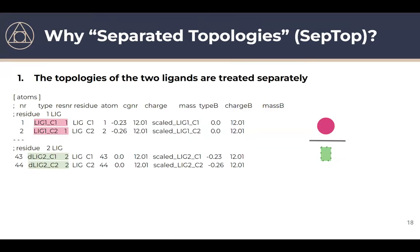Why 'separated topologies'? The reason is that the topologies of the two ligands are treated separately. In GROMACS, we have the full description for the magenta ligand and then completely separately the description of the green ligand. This is very different from the traditional hybrid topology approach, where you have a common core and all atoms from that core are represented only once in the topology.